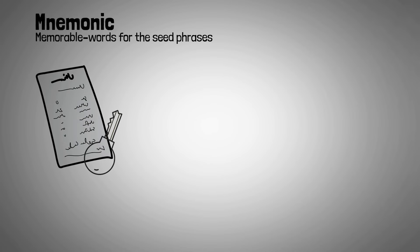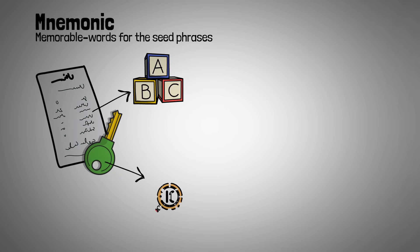BIP39-based deterministic wallets use mnemonic or memorable words for the seed phrases because it's easier to remember words like ask, post, hero, than a random string of letters or numbers that's in a private key, or even worse, binary code.